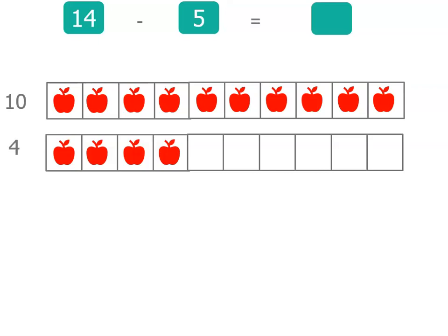So you can see I've got 10 apples there and 4 apples there. Even though I take away 5, I'm first going to take away 4 apples, and then I have to take away one more so that I'm taking away 5 altogether.